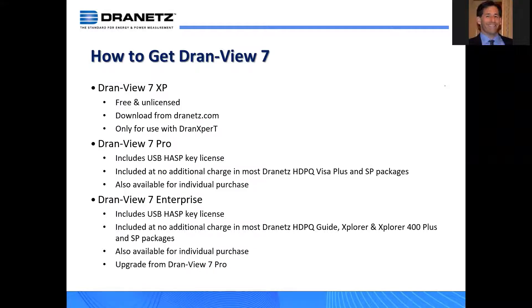DranVue 7 Enterprise, having additional features, is kitted in all of our other HDPQ packages — our Guide, our Explorer, our Explorer 400 Plus, and our SP packages. Pro is included with our Visa kits, and Enterprise is included with everything else. However, if you purchase a Visa that comes with DranVue 7 Pro, for a nominal fee you can upgrade to DranVue 7 Enterprise from Pro. We get the license information from your key and issue you an upgrade — that's something tech support handles.